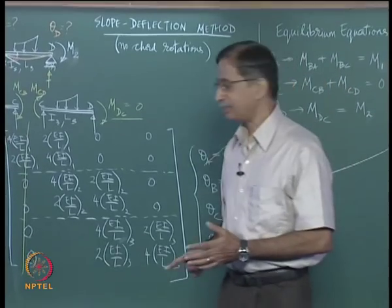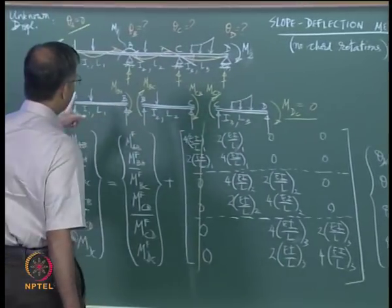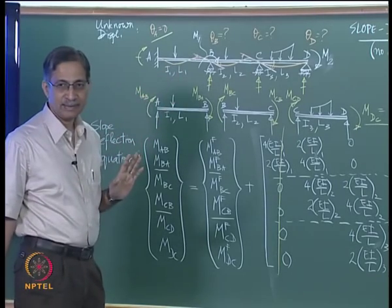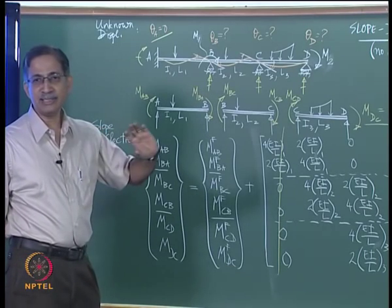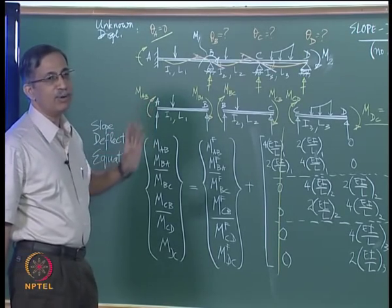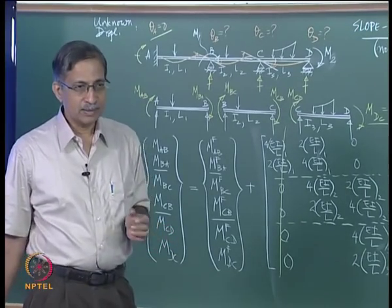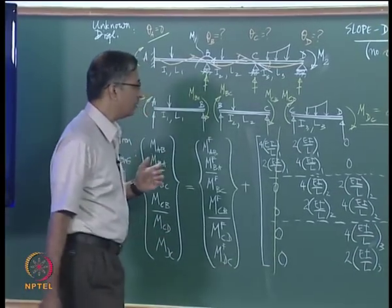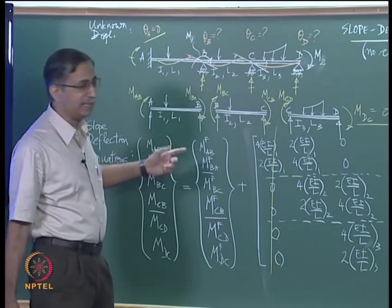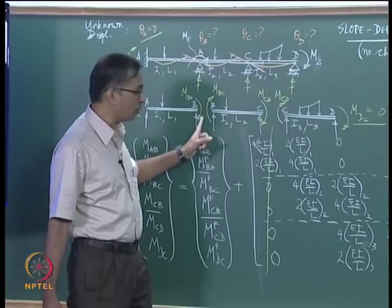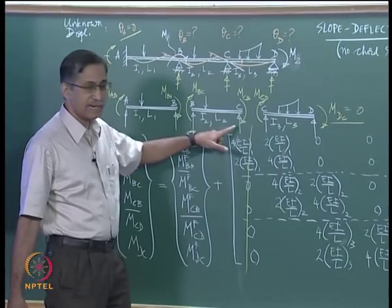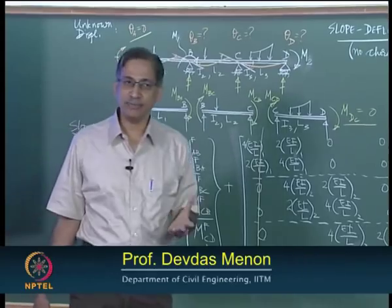Before we continue, I would like you to see this big picture on the board. Here I have shown a typical continuous beam. In this particular example, you have three spans. All the beam segments are prismatic — they have constant EI. Our idea is to be able to draw the bending moment diagram and the shear force diagram. To draw these diagrams, we need to know the end moments. If we know the end moments, each beam can be treated as simply supported with known end moments. We can analyze each segment separately, get the reactions, and for each element draw the shear force and bending moment diagram.